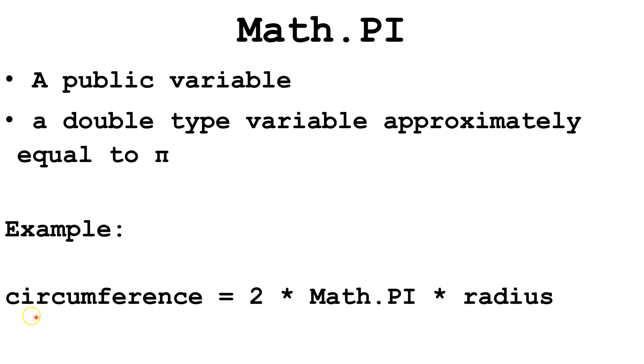For example, the variable circumference equals 2 times Math.pi times radius. You will notice that there is no open close parentheses after Math.pi. That's because pi is a variable and not a method, like the others.